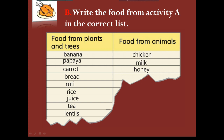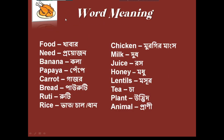প্রাণী থেকে পেয়ে থাকি - দেখো chicken, মুরগির মাংস। এটা আমরা পশু/প্রাণী থেকে পাই। এরপর দেখো milk, দুধ - আমরা কোথা থেকে পাই? Honey, মধু - মোমাছি থেকে আমরা কি মধু পাই? হ্যাঁ।